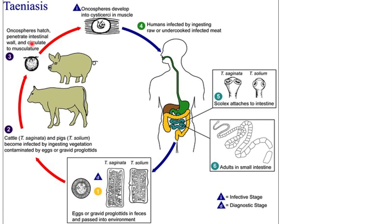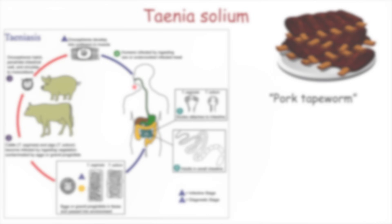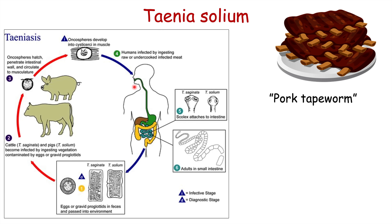Oncospheres — a stage of the tapeworm — hatch and penetrate the intestinal wall, circulate through the pig, and enter into the musculature. The oncospheres then develop into cysticercae in the muscle. These cysticercae reside in the muscle of the pig, and then a human ingests undercooked or uncooked infected meat. This is why Taenia solium is called the pork tapeworm.